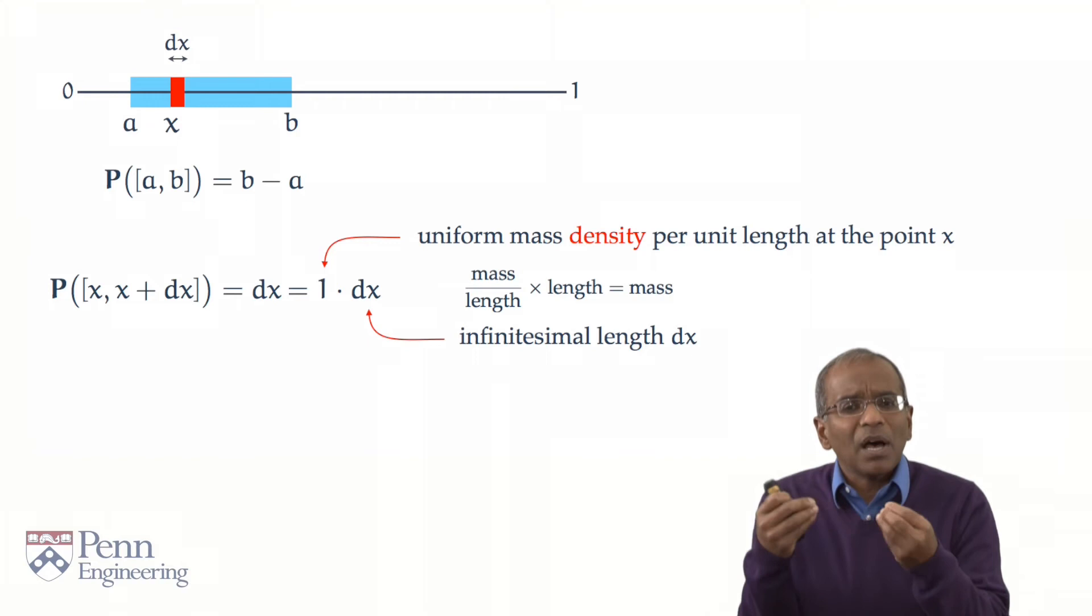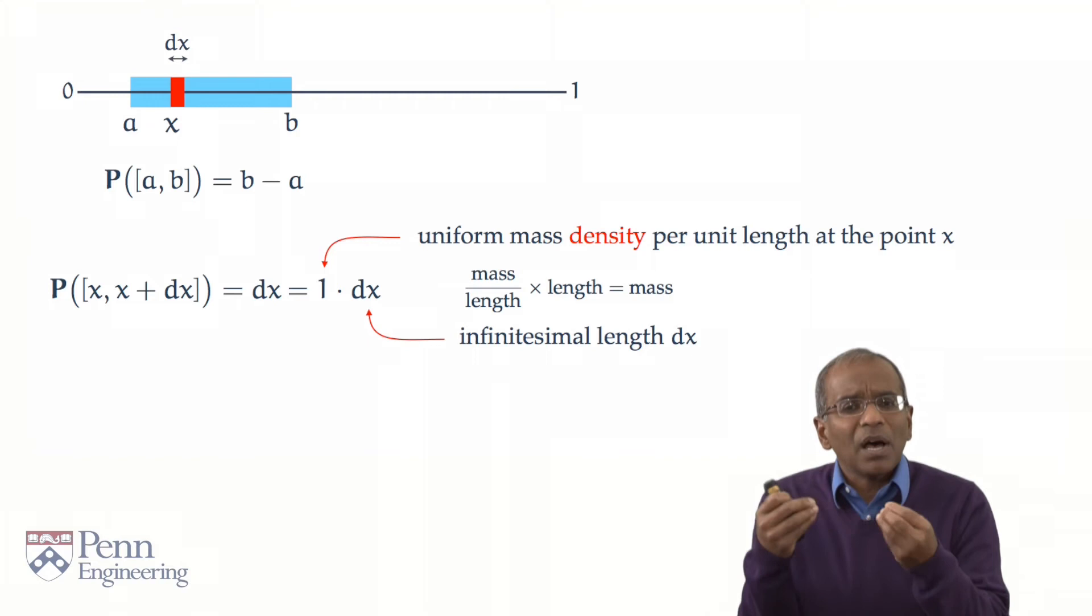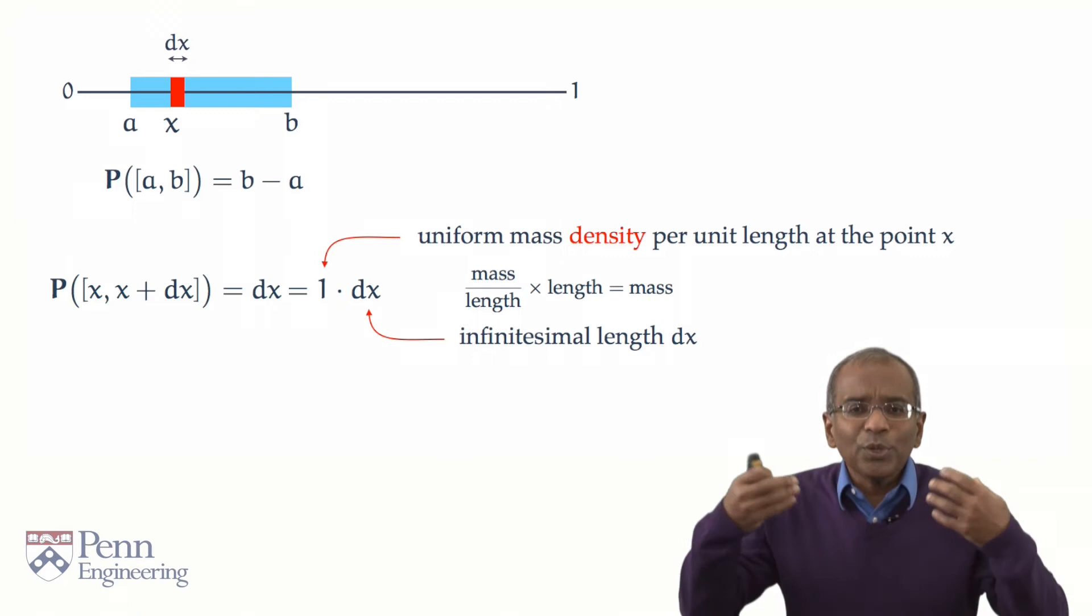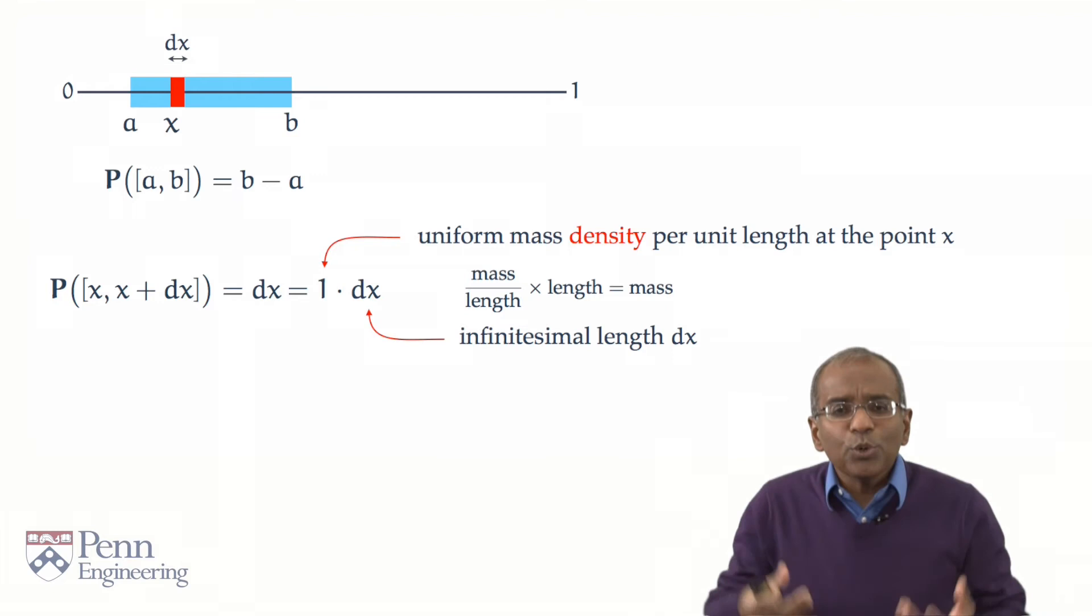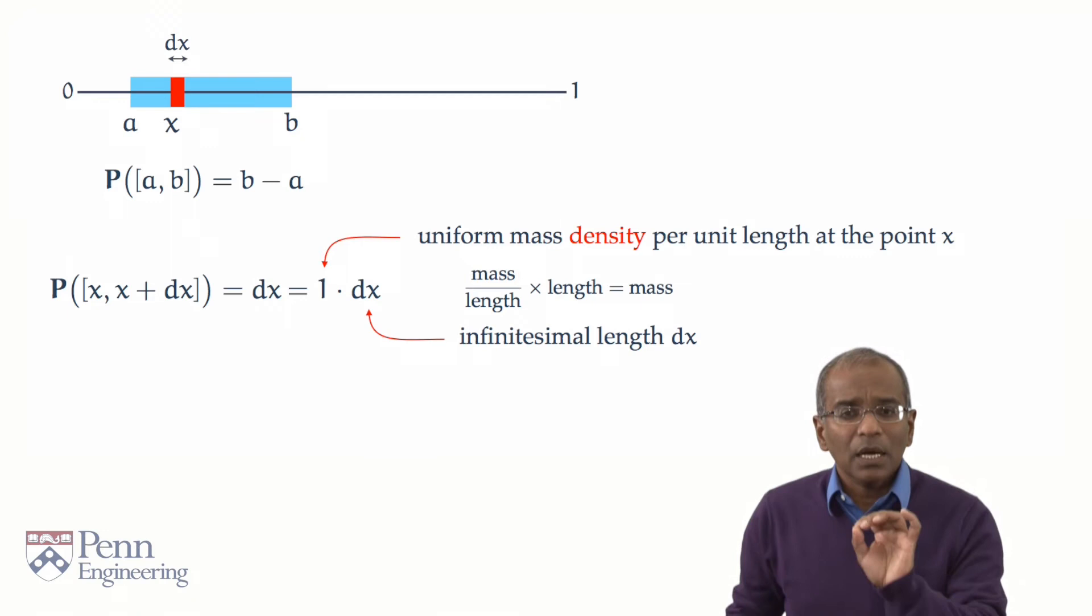Now what is this object, mass divided by length? That is what we call a density in physics. And we use the same nomenclature, the same kind of vivid physical illusion here, to think of a density as something which has got units of mass per unit length.